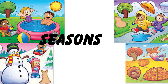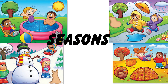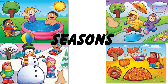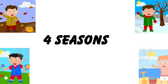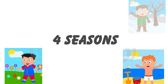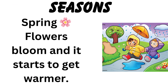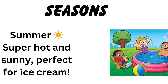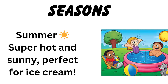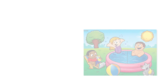Now let's learn about seasons. Seasons are long periods of the year with specific types of weather. There are four main seasons. Spring: flowers bloom and it starts to get warmer. Summer: super hot and sunny, perfect for ice cream.